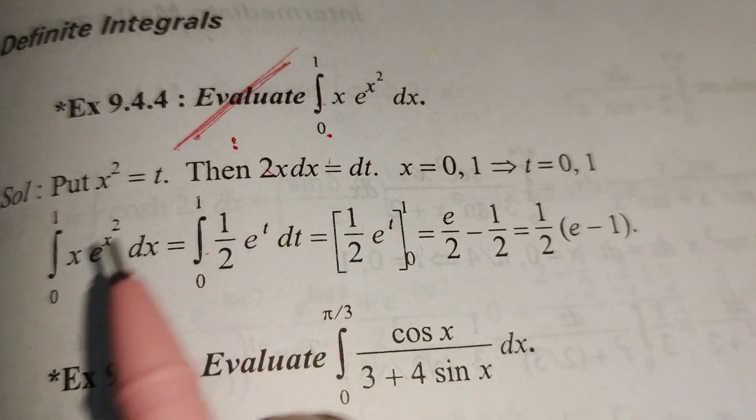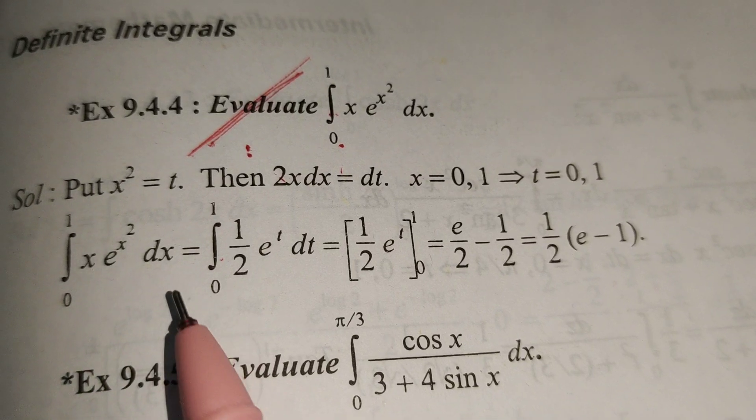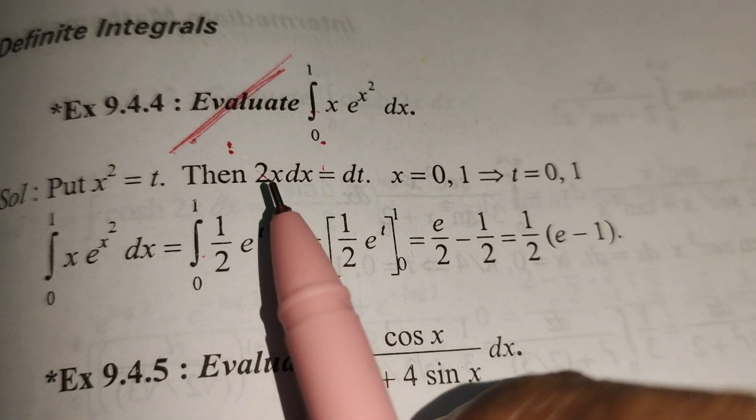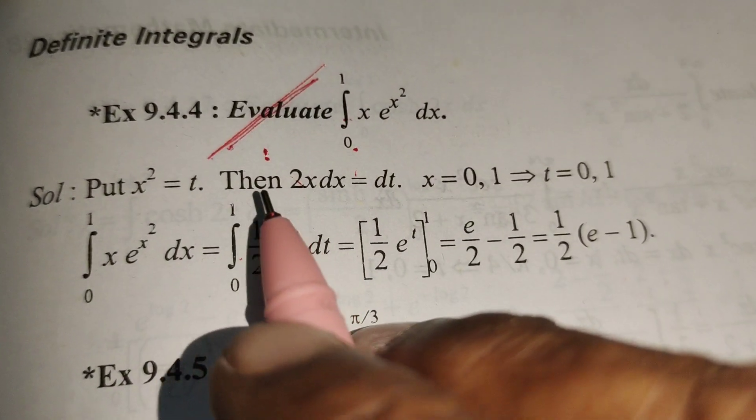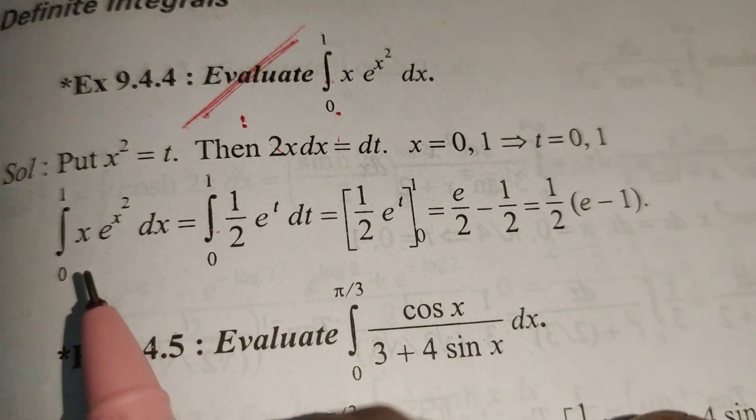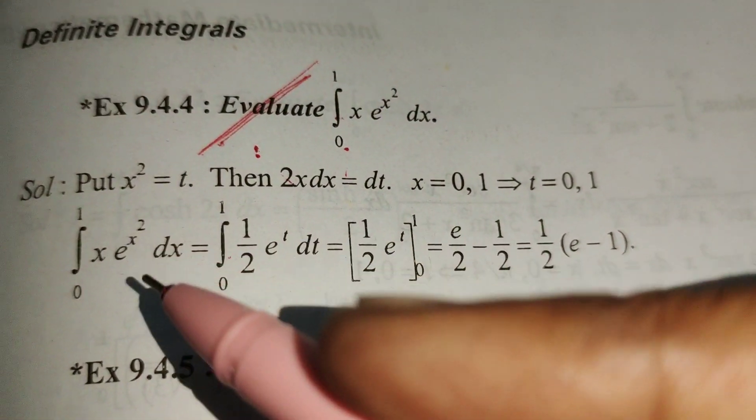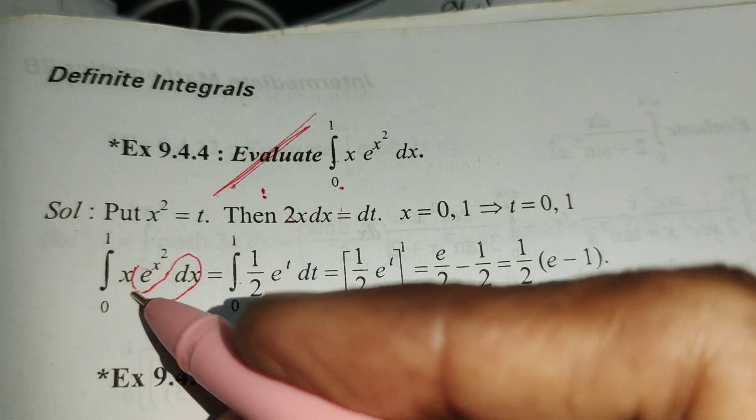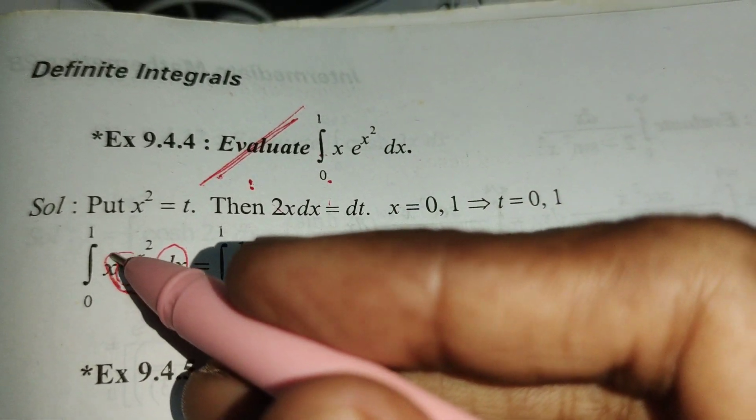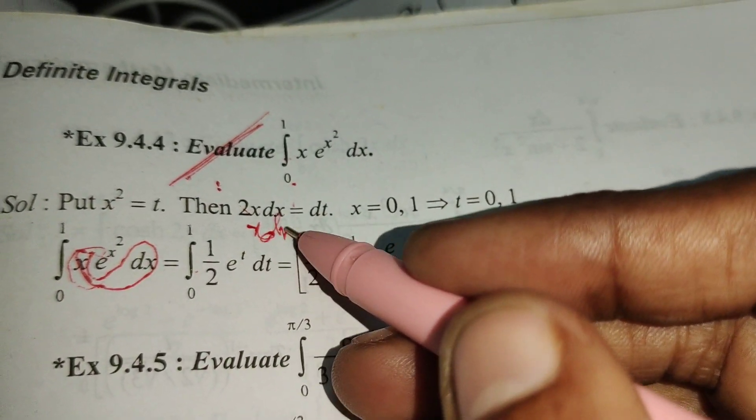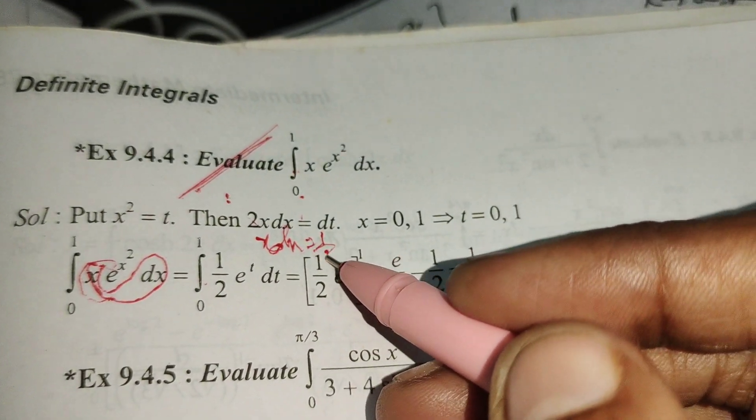Then we write the given problem as an integral from 0 to 1. Now write in terms of t by substituting the considered substitutions.